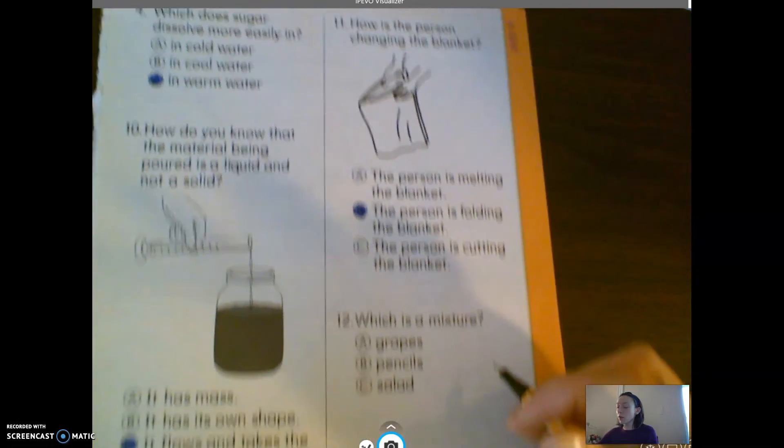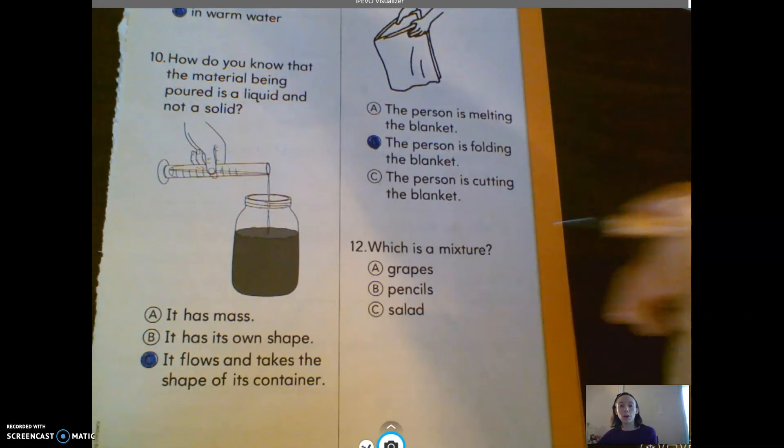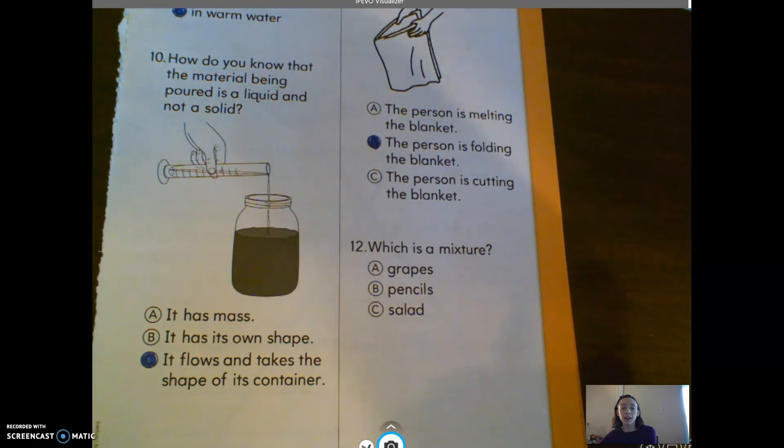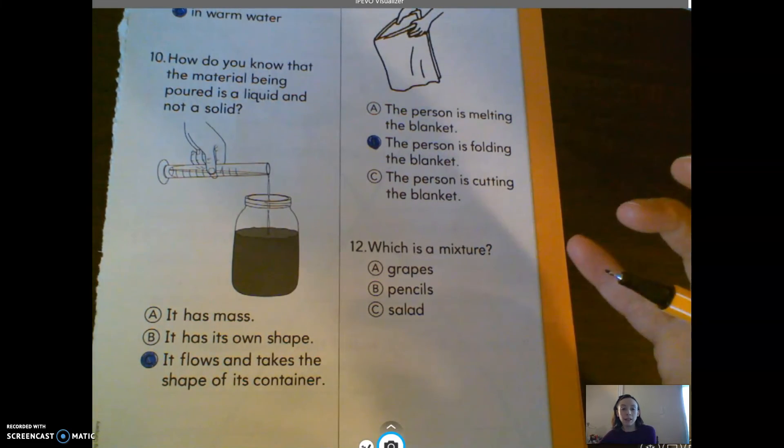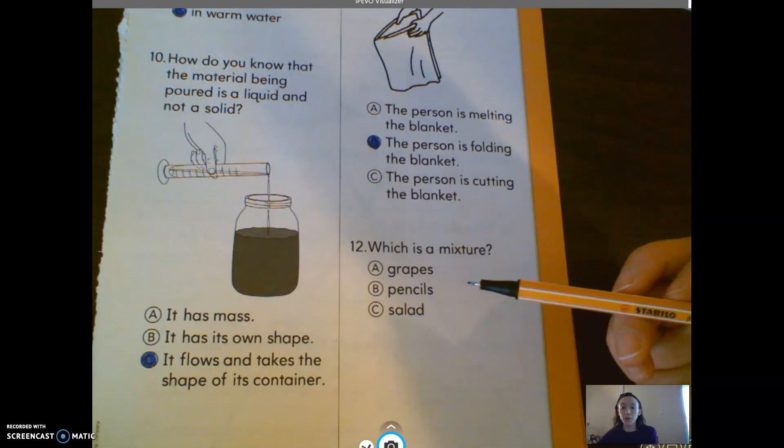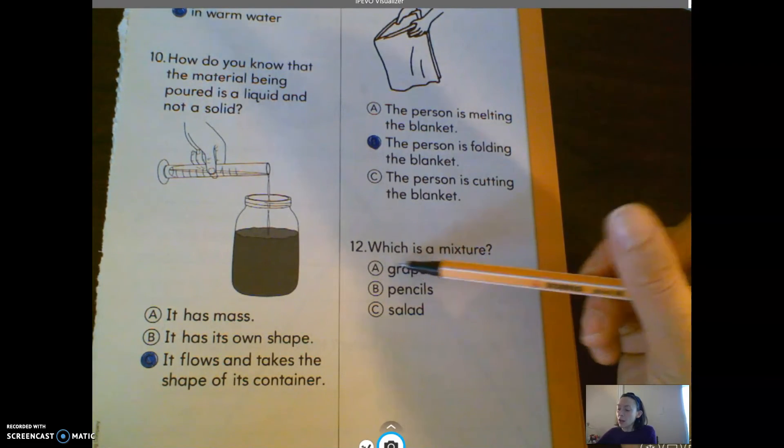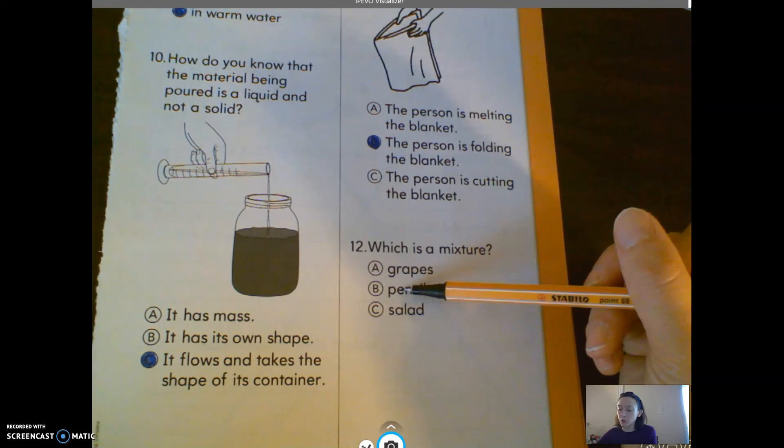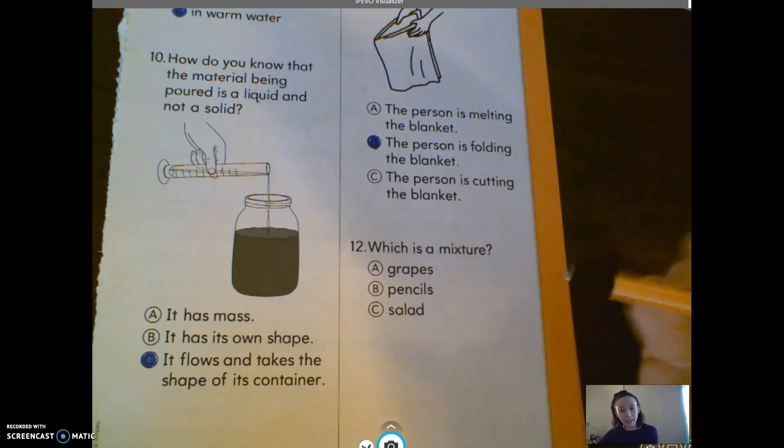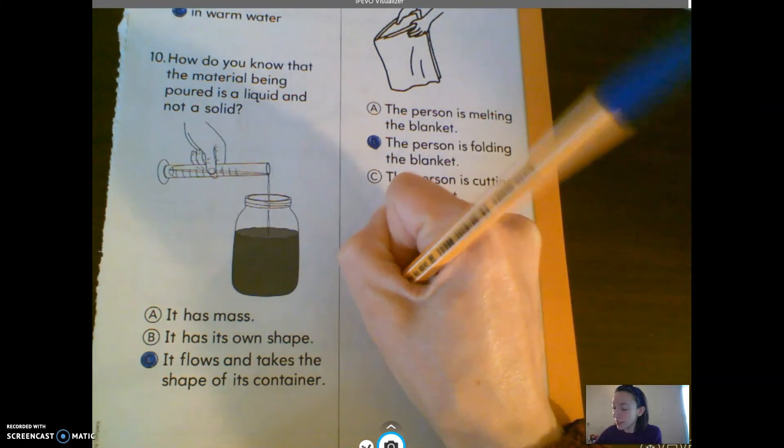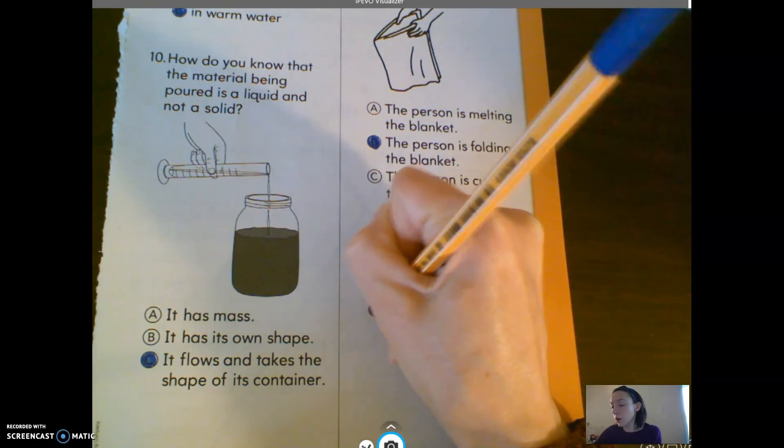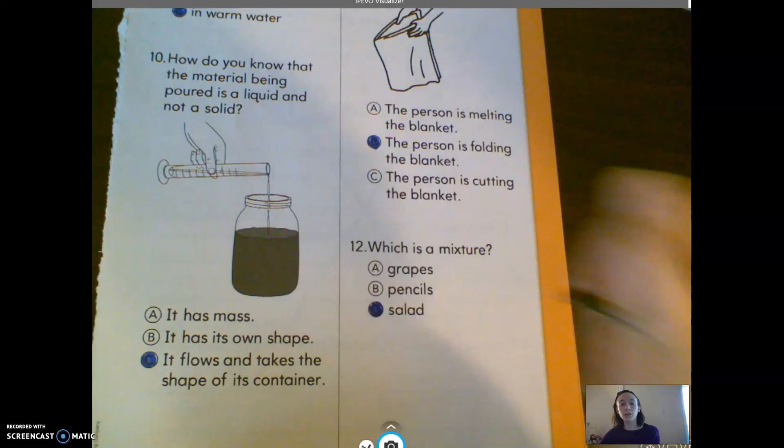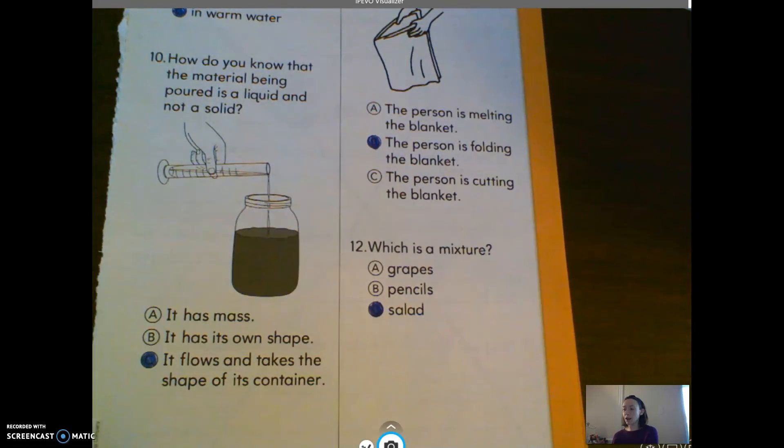Number 12: which is a mixture? Remember, a mixture is different things, like combined, like a fruit salad. A, grapes. B, pencils. C, a salad. A salad is a mixture, because it has lettuce and cucumbers and cheese and salad dressing.